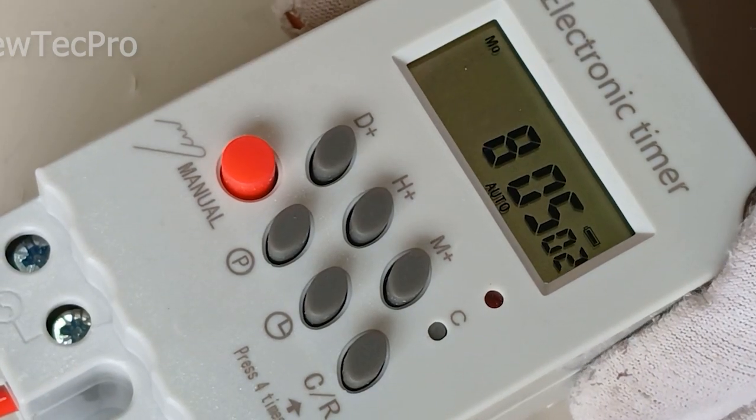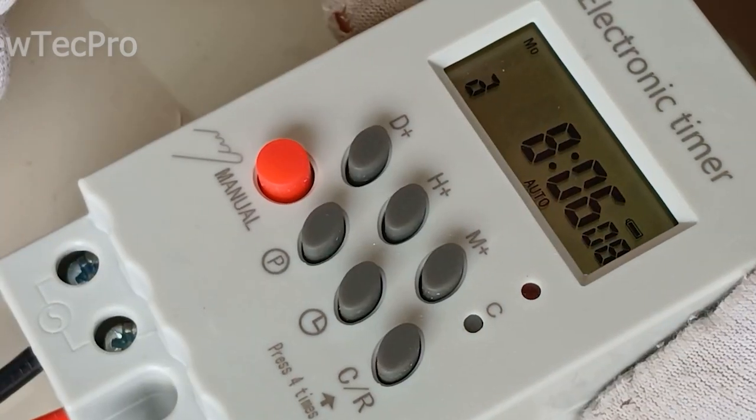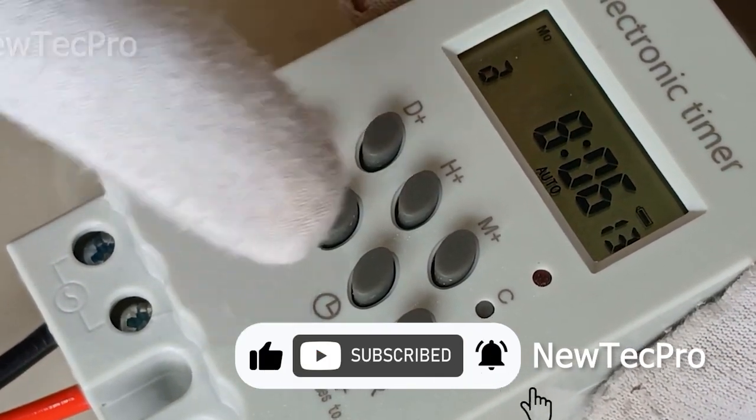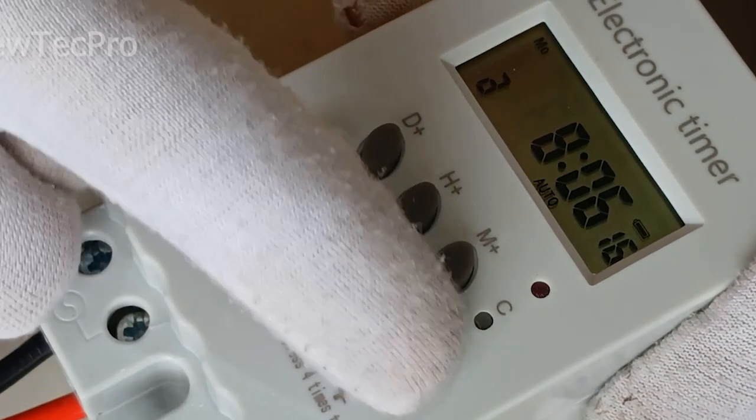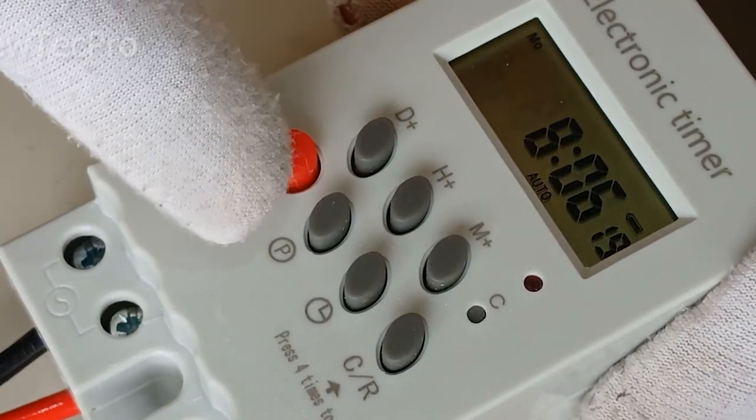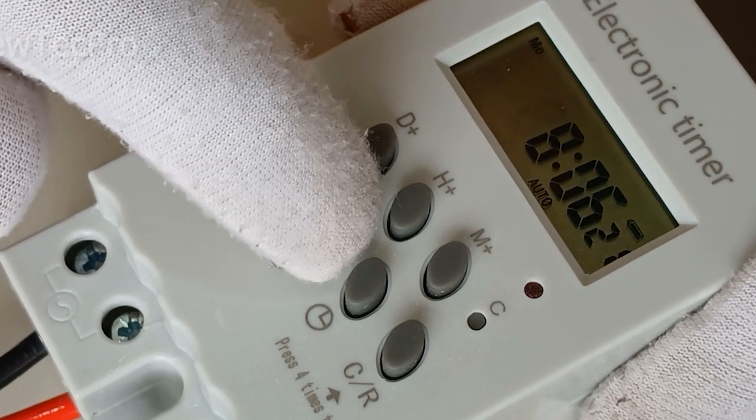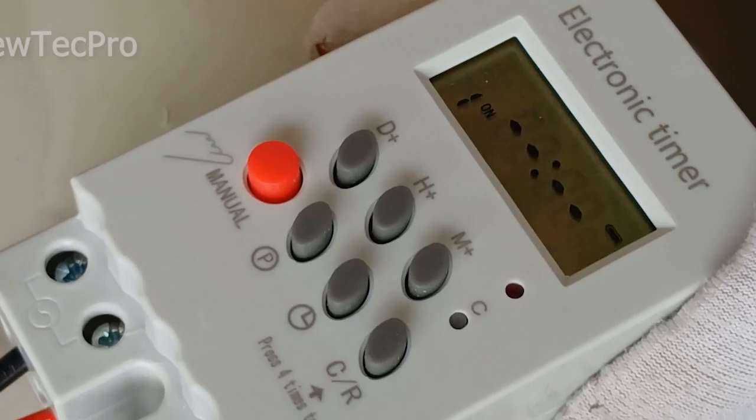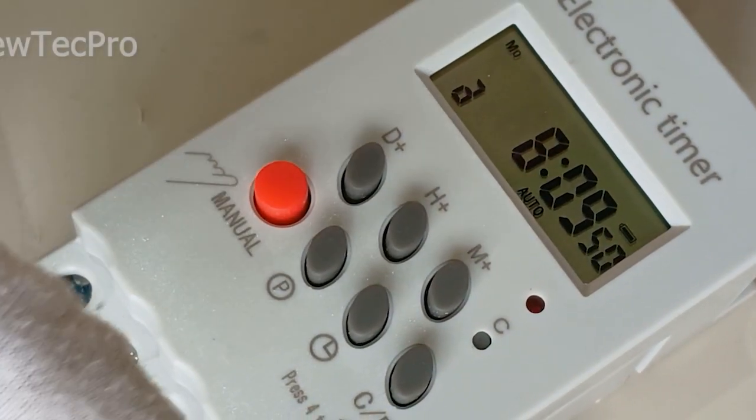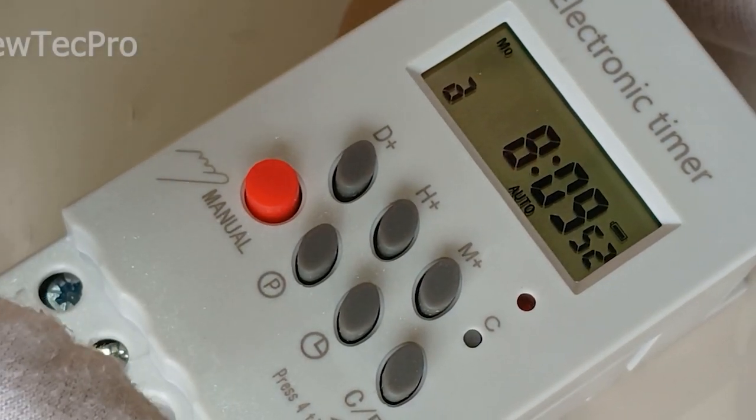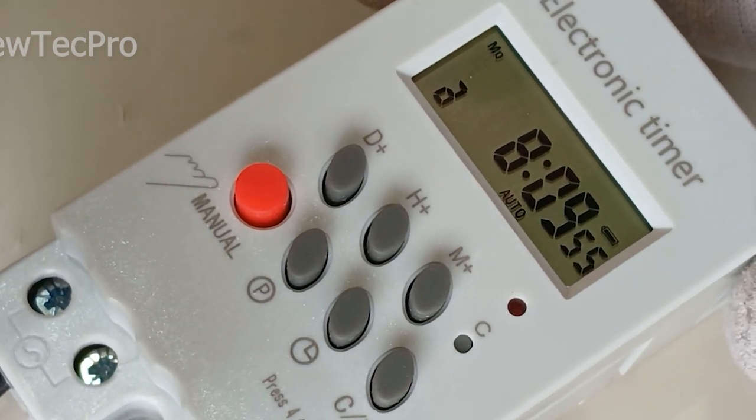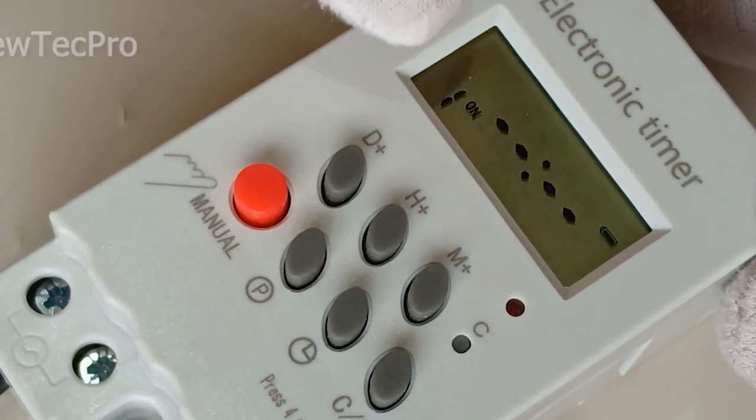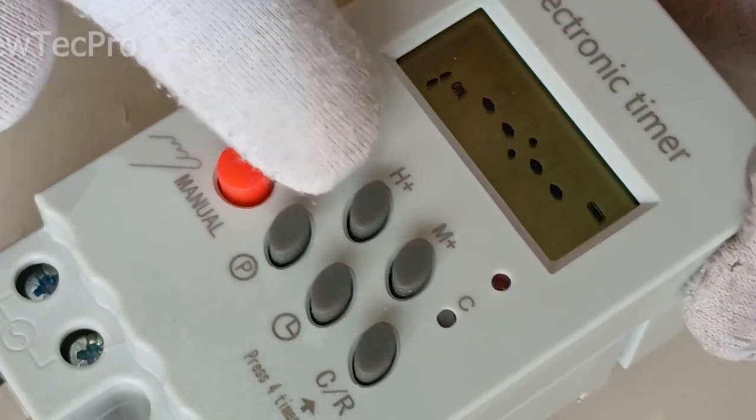Okay, let's go to programming. You need to press P. Press P one on. For example, we want the timer to start on Saturday at five o'clock. Press P one on, D.